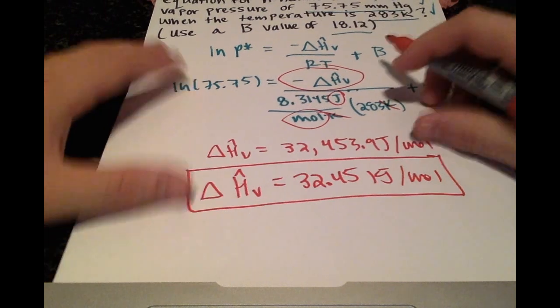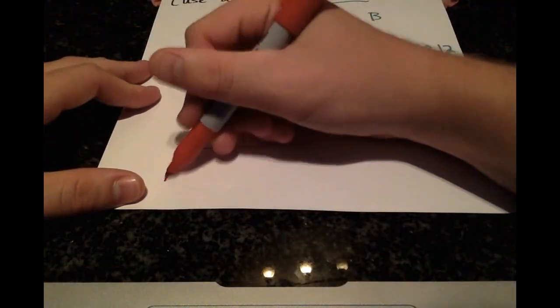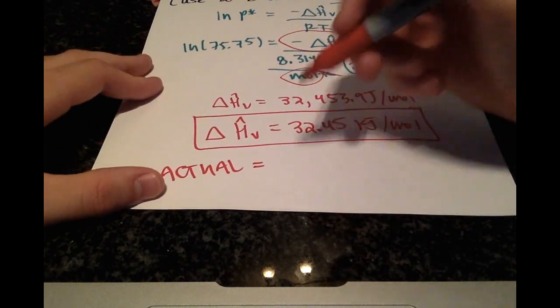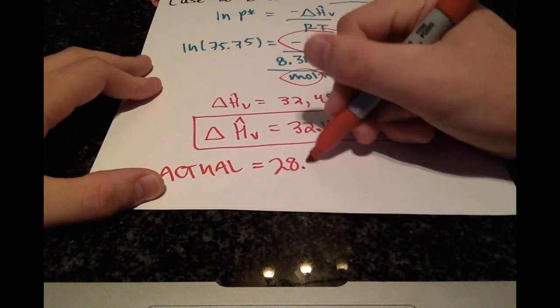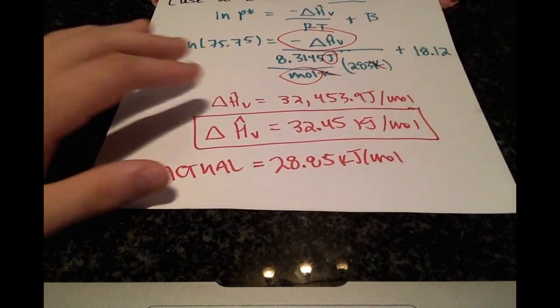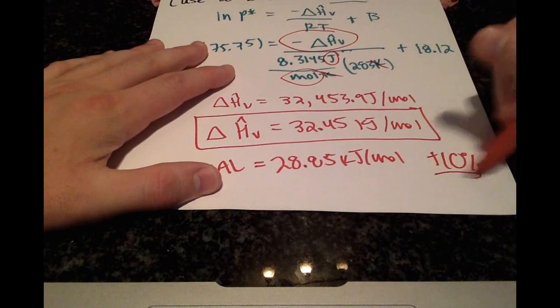And just for a point of comparison, the actual latent heat of vaporization for n-hexane is 28.85 kilojoules per mole. And that's more of a 10% difference.